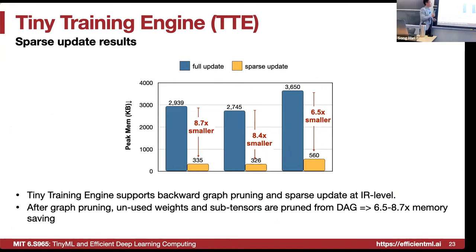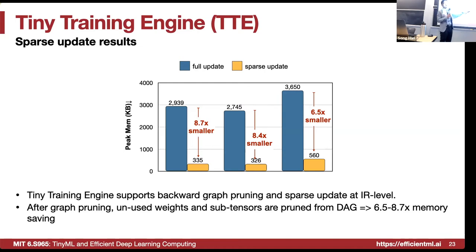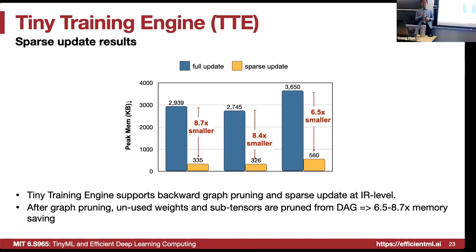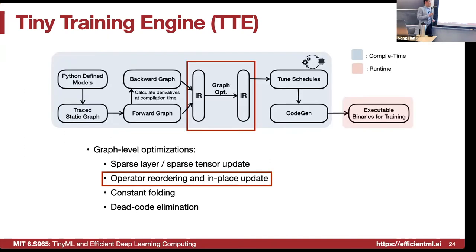This reduction applies to image classification tasks. We also explored these techniques for transformers running on BERT — a similar method can also save memory consumption on language tasks like BERT.